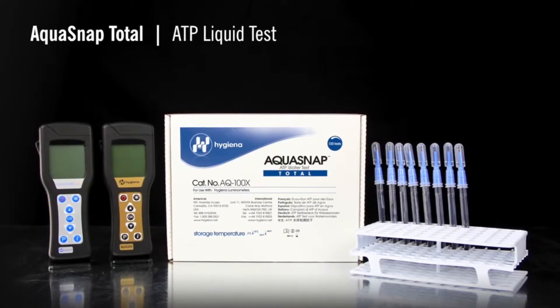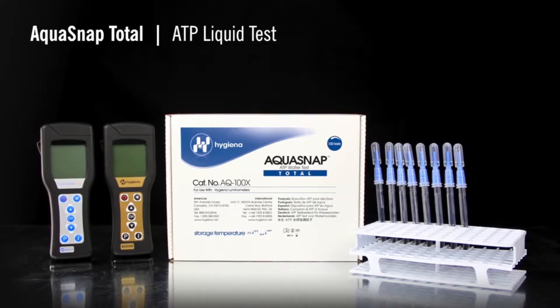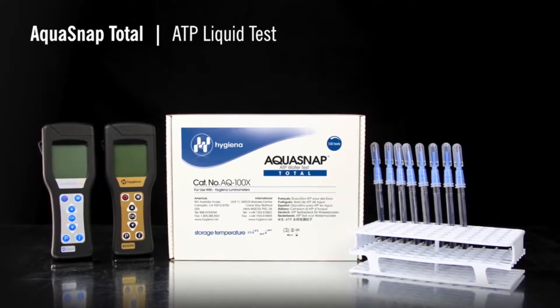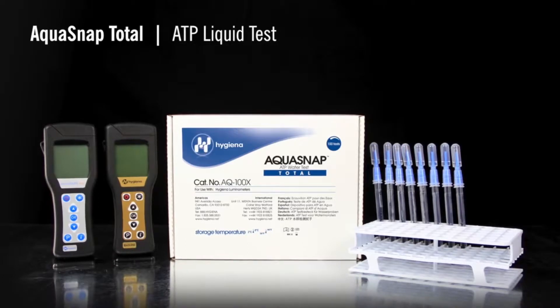AquaSnap detects both organic and microbial contamination. It is often used as a tool for the management of water systems, such as cooling towers or clean-in-place systems.